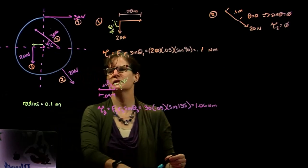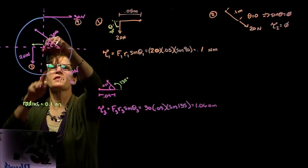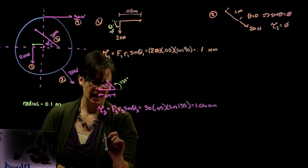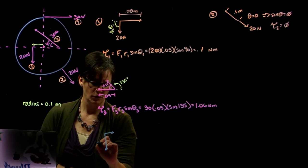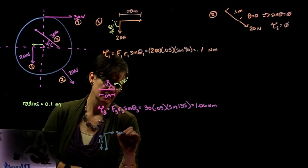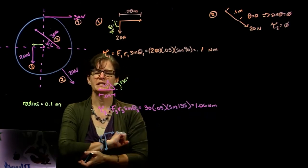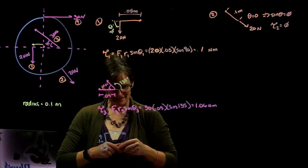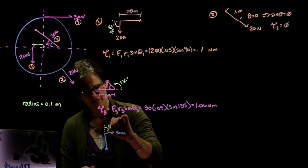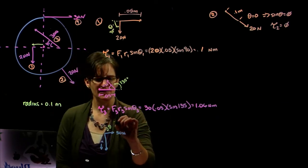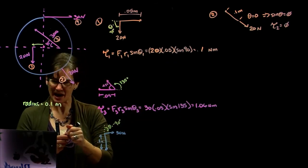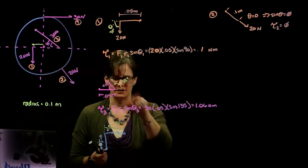And then our final force, force number four, that's as if it's acting on the disc if it's in the upper vertical plane. It acts at that full 0.1 meter, so its radius is 0.1 meters. And its force is pointing to the right. So if I extend my radius and curl to the force, I have this angle. And this is negative 90 degrees. It's rotating in the clockwise direction of 90 degrees.